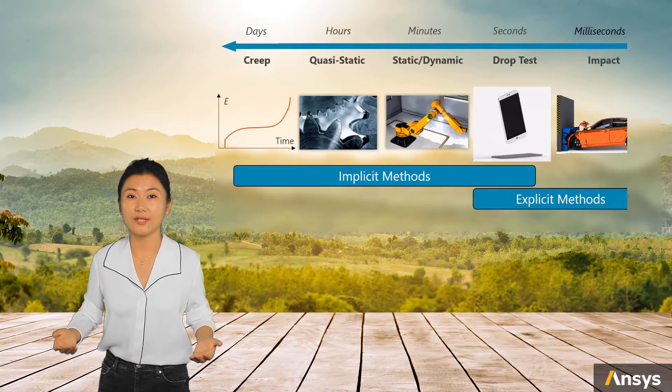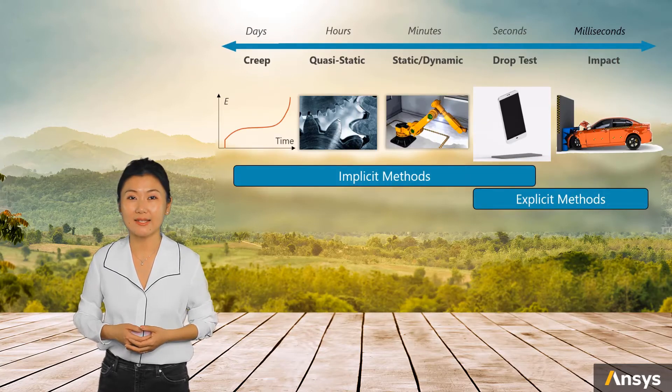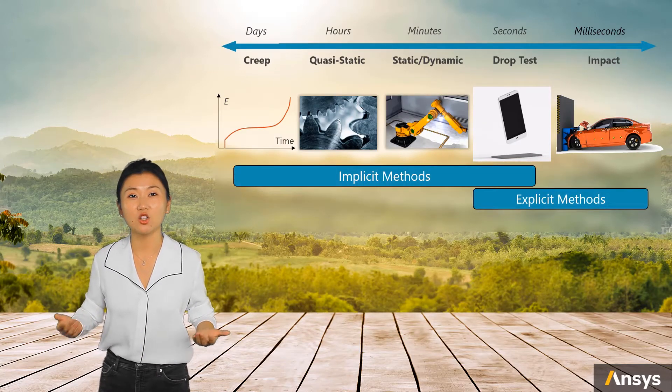The guideline to choose between implicit and explicit: for slow-movement, long-duration analysis, or even quasi-static analysis, implicit method is preferred. Examples include material creep analysis, gear intermission, robot arm, etc.